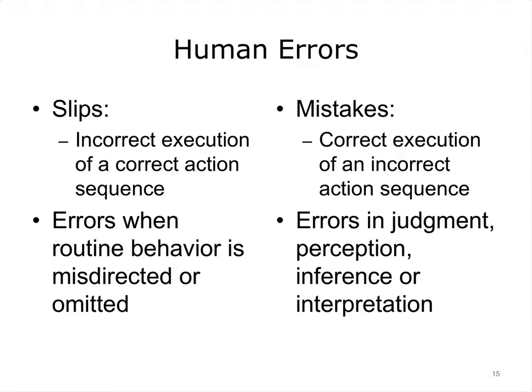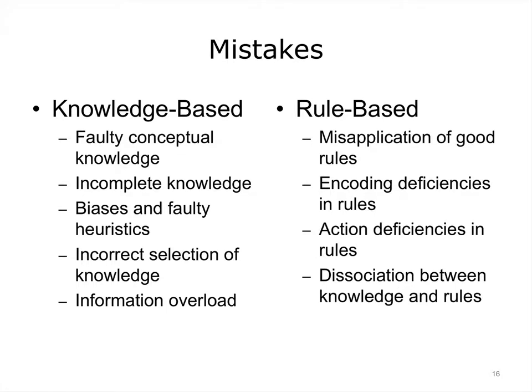Now we will introduce a couple of important distinctions that will help us understand the nature of human error. We can distinguish between slips, in which the actor selected the appropriate course of action but it was executed inappropriately. In contrast, a mistake involves an inappropriate course of action reflecting an erroneous judgment or inference — for example, a wrong diagnosis or misreading of an x-ray. Mistakes may be either knowledge-based, owing to factors such as incorrect knowledge, biases such as confirmation bias, or overburdened working memory, or they may be rule-based, in which case the correct knowledge was available but there was a problem in applying the rules or guidelines.